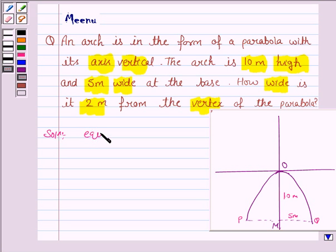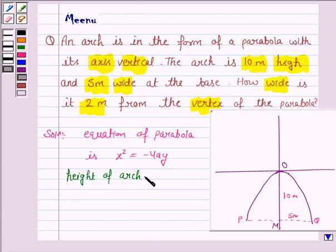The equation of parabola is x² = -4ay. Here, height of the arc is 10 meter, which is OM, and that is y.